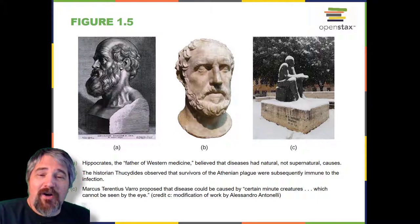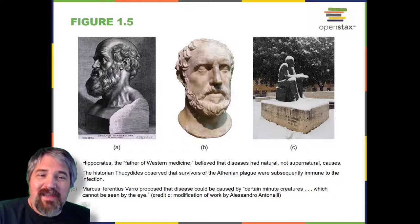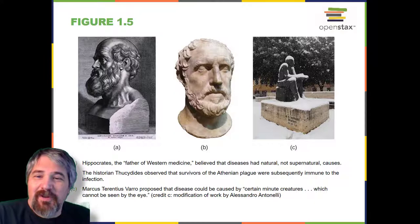Marcus Terentius Varro (116–27 BC) was a prolific Roman writer who was one of the first people to propose the concept that things we cannot see — now called microorganisms — can cause disease. In Res Rusticae (On Farming), published in 36 BC, he wrote that precautions must be taken in neighborhood swamps, because certain minute creatures grow there which cannot be seen by the eye, which float in the air and enter the body through the mouth and nose, causing serious diseases.